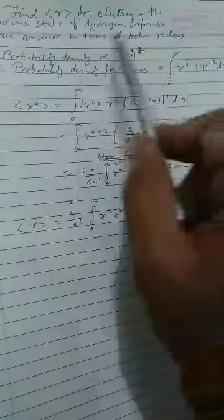Hi friend, today's topic is find expected value of R for electron in the ground state of hydrogen. Express your answer in terms of Bohr radius A.